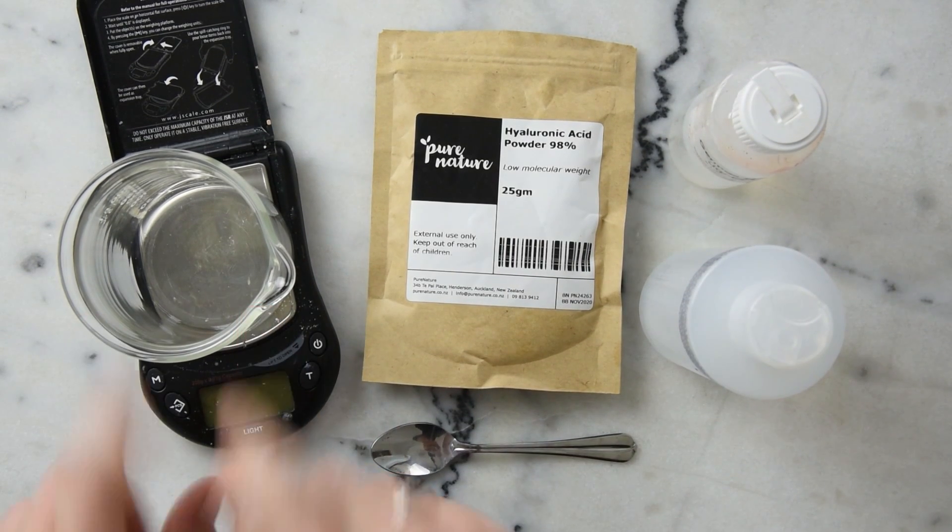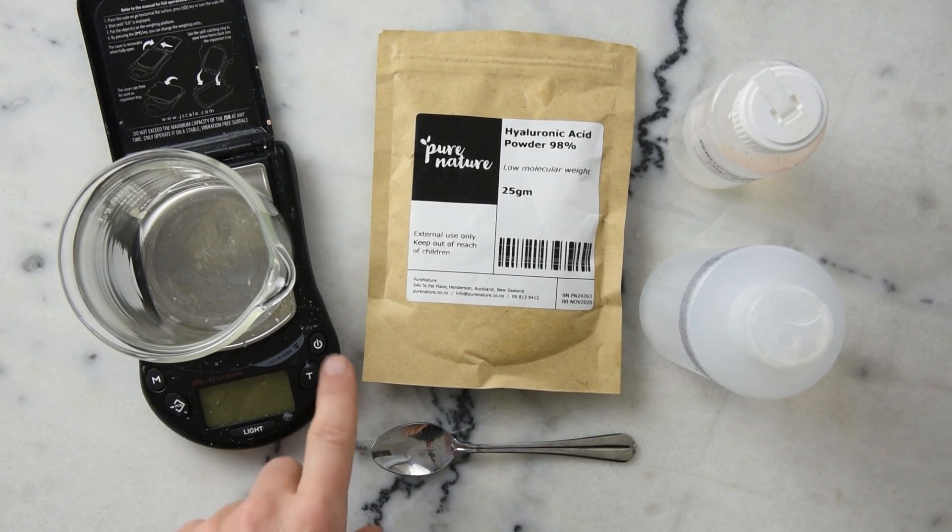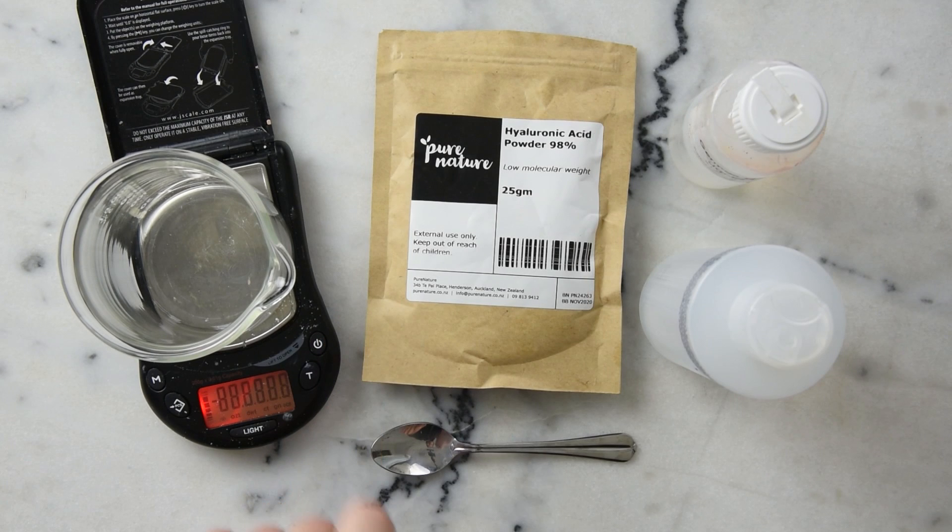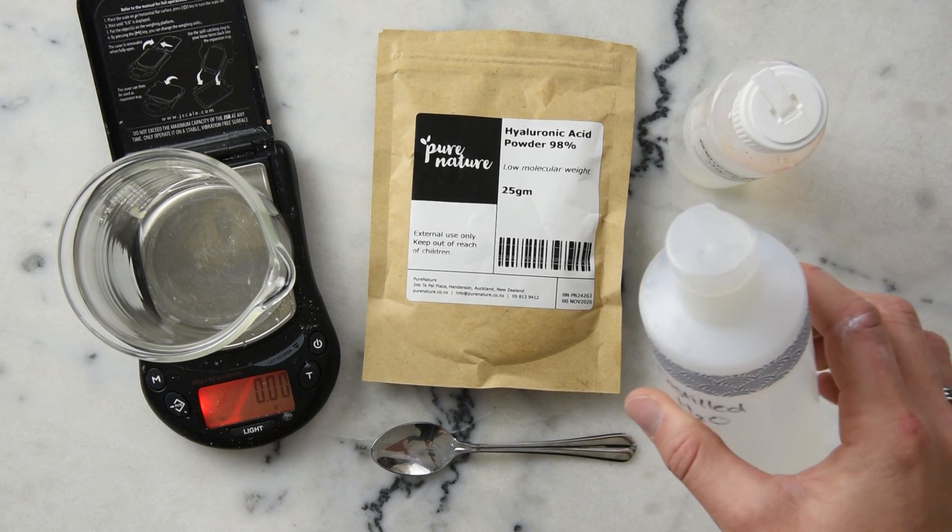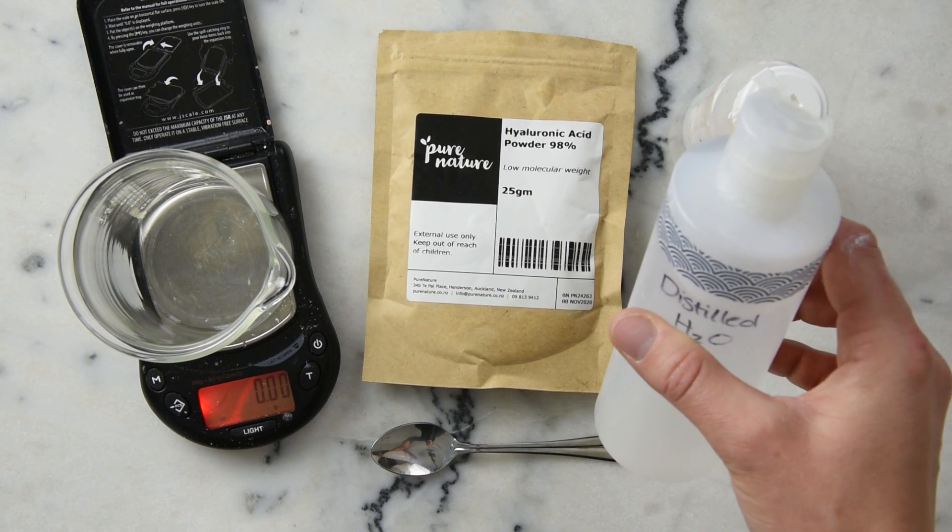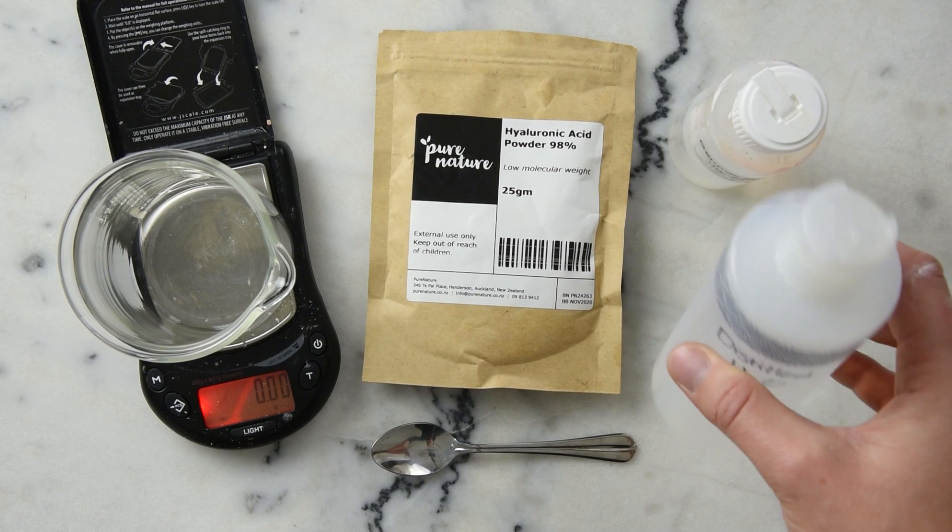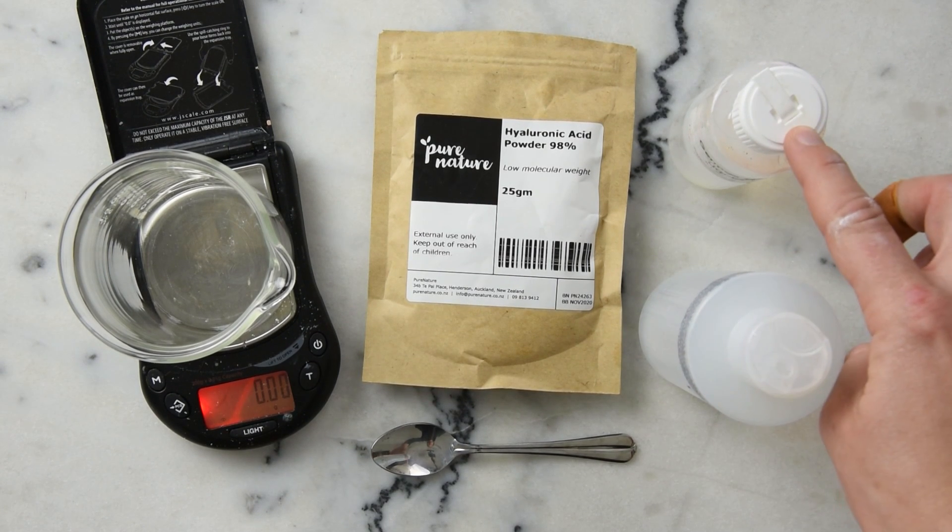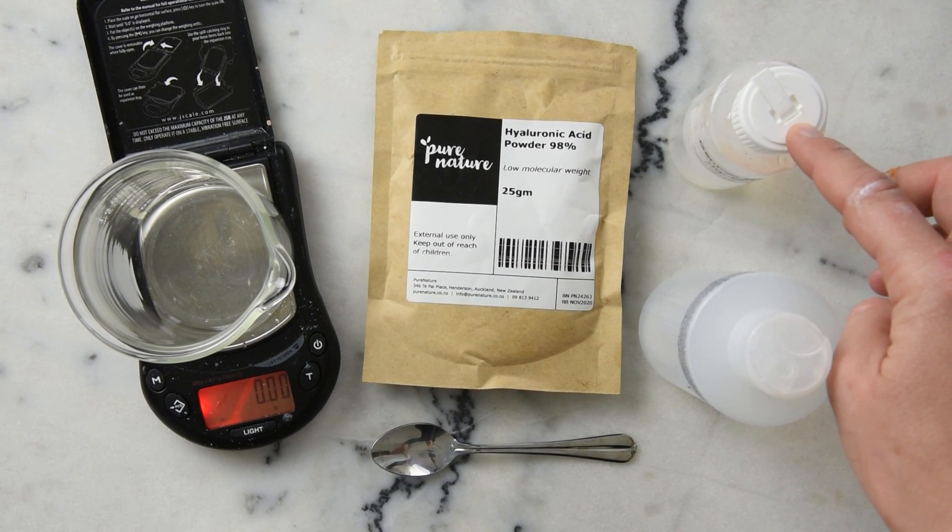We'll begin by measuring everything into a beaker. You'll want to make sure you're using quite an accurate scale for this project—this one is accurate to 0.01 grams. We're going to start with 98.5 grams of water, then add half a gram of liquid germal plus, which brings us to 99 grams.